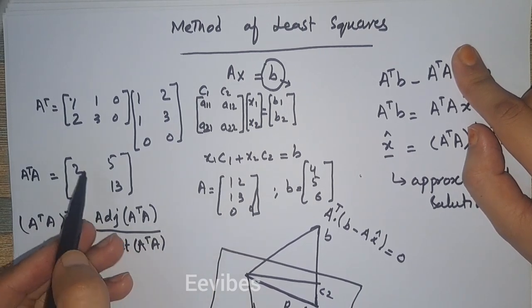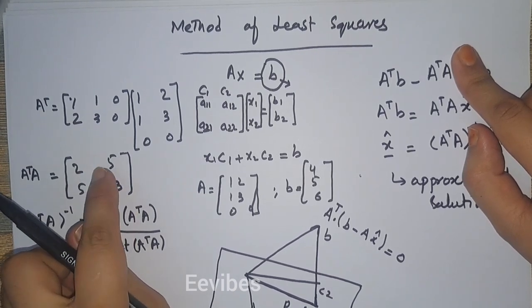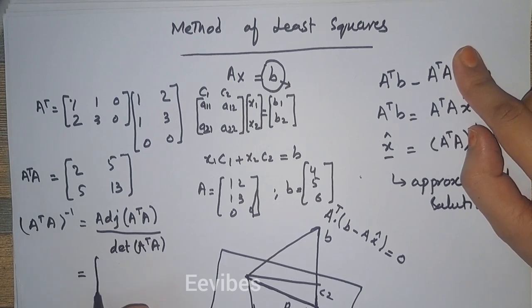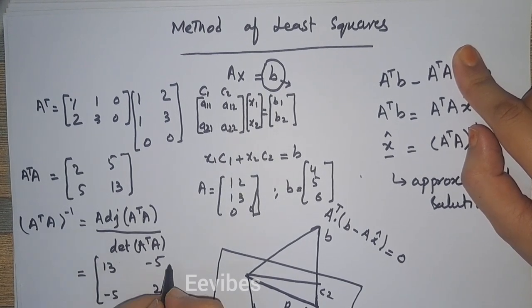The adjoint is found by replacing the diagonal entries and by switching the signs of the off-diagonal entries, which is equal to [13, -5; -5, 2].